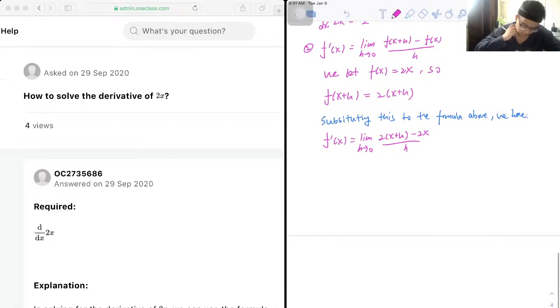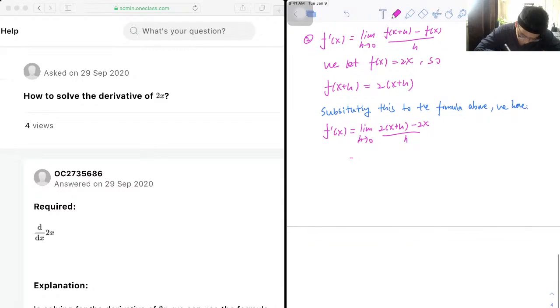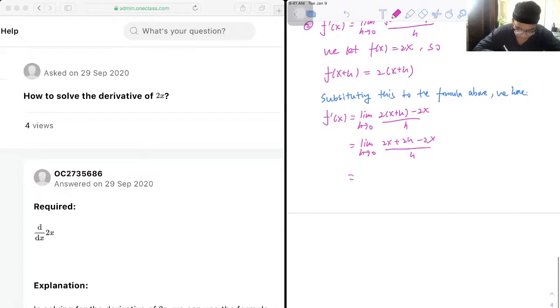And which is also equal to 2x plus 2h minus 2x over h, and we got a positive 2x and a negative 2x, so we can cancel this out.